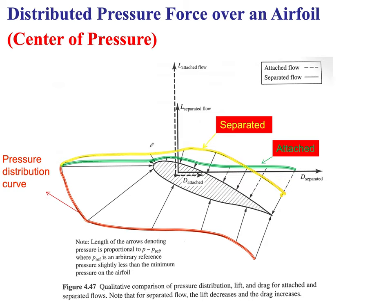In summary, we have covered how to compute the net force due to a distributed pressure over an object, where the action point of that distributed pressure force should be placed, the moment associated with it, and the definition of the center of pressure as the point where the moment due to the pressure distribution is zero. This is something we will return to in more detail later.